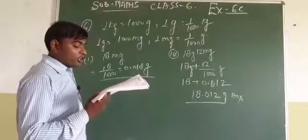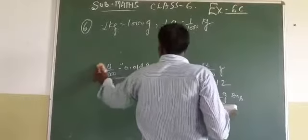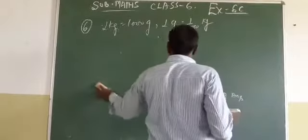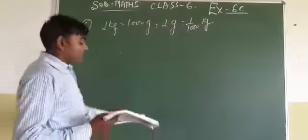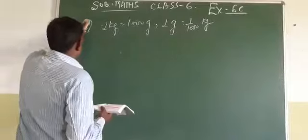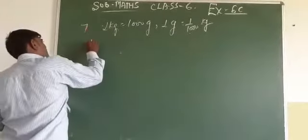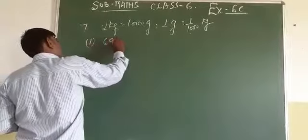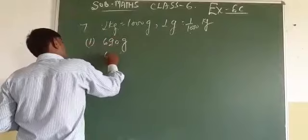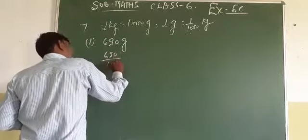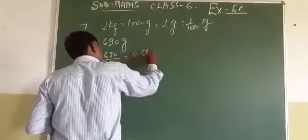Question 7: expressed as kilogram using decimal. So here 1 kilogram equal to 1000 gram. The first question of 7 is 690 gram. So 690 upon 1000 equal to 0.690 kilogram.